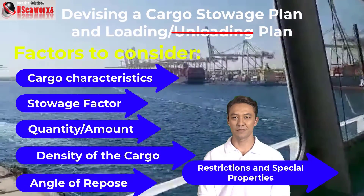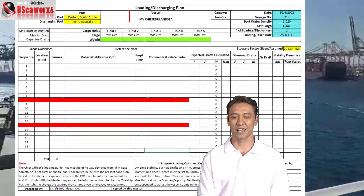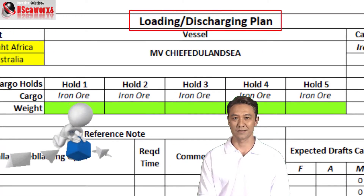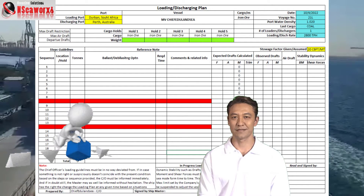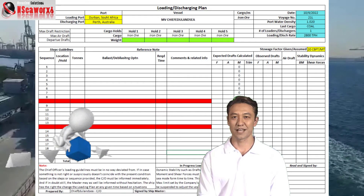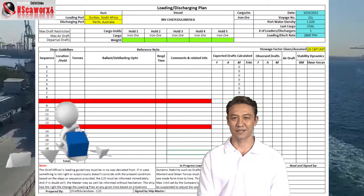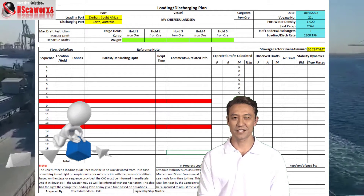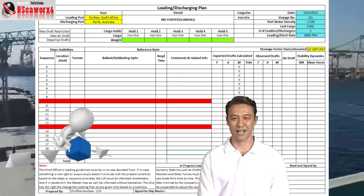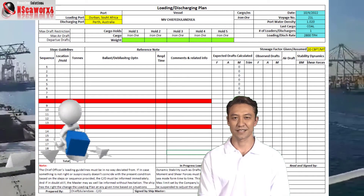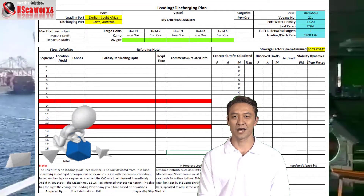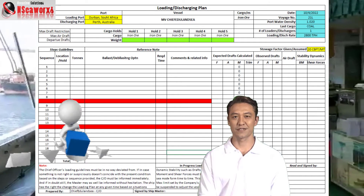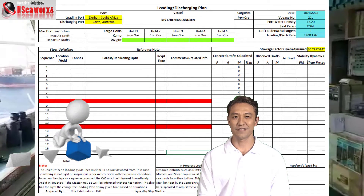This is an example of a loading plan form. The form may vary in different ships and their companies, but in general they are basically the same and go in the same direction in terms of contents. As we can see, it is subdivided or tabulated — basically data and information arranged in a way that the duty officer should be confident enough to follow.